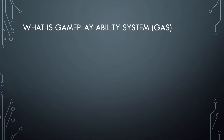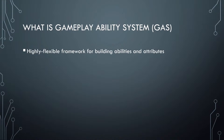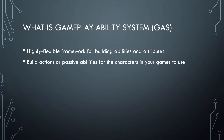So just to give an introduction: what is a Gameplay Ability System? It's a highly flexible framework for building abilities and attributes. Abilities could range from projectile abilities, shooting abilities, and casting spells. Attributes include things like health, mana, and stamina. This allows you to build actions like active abilities or passive abilities for characters in any kind of game.